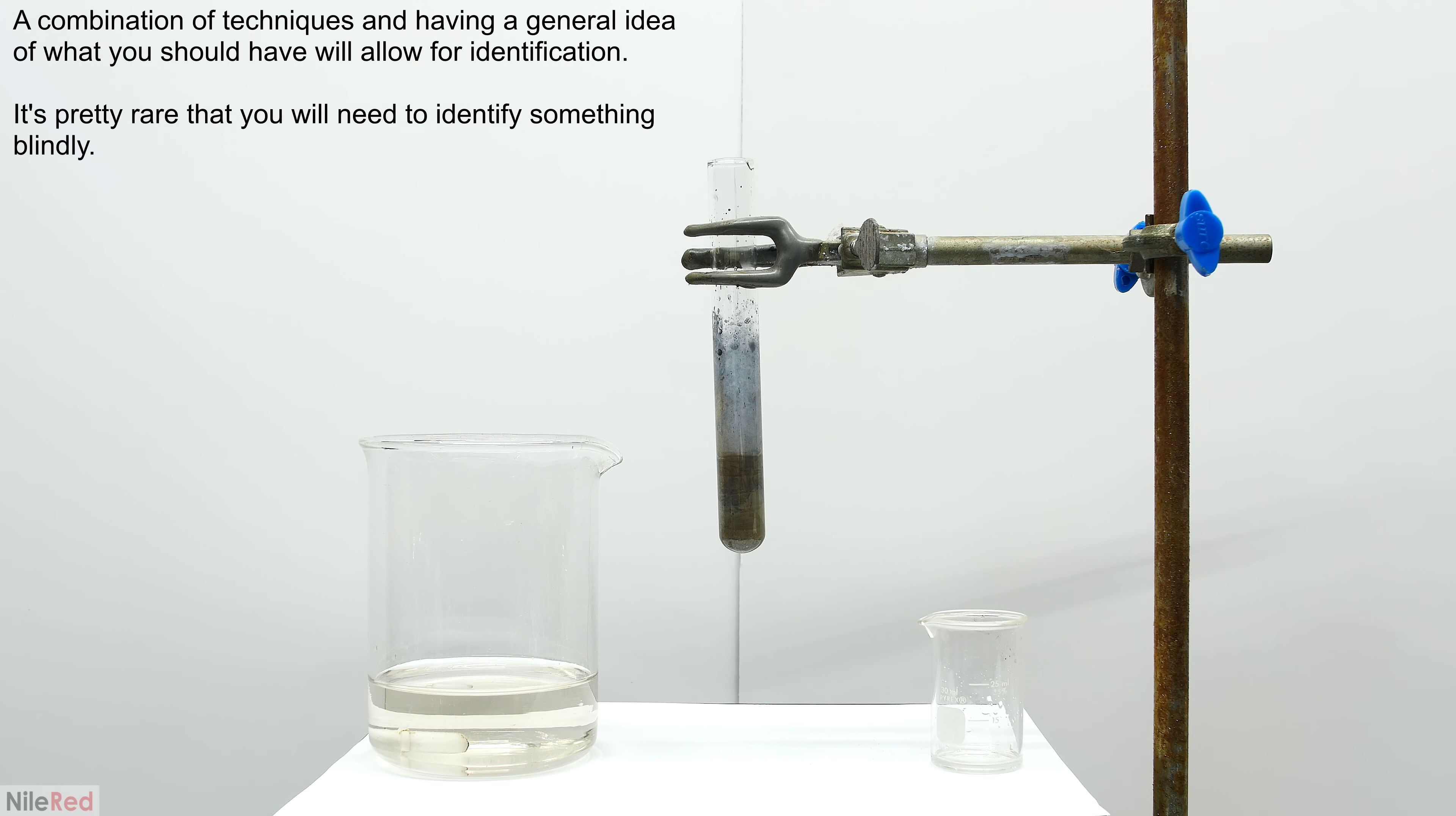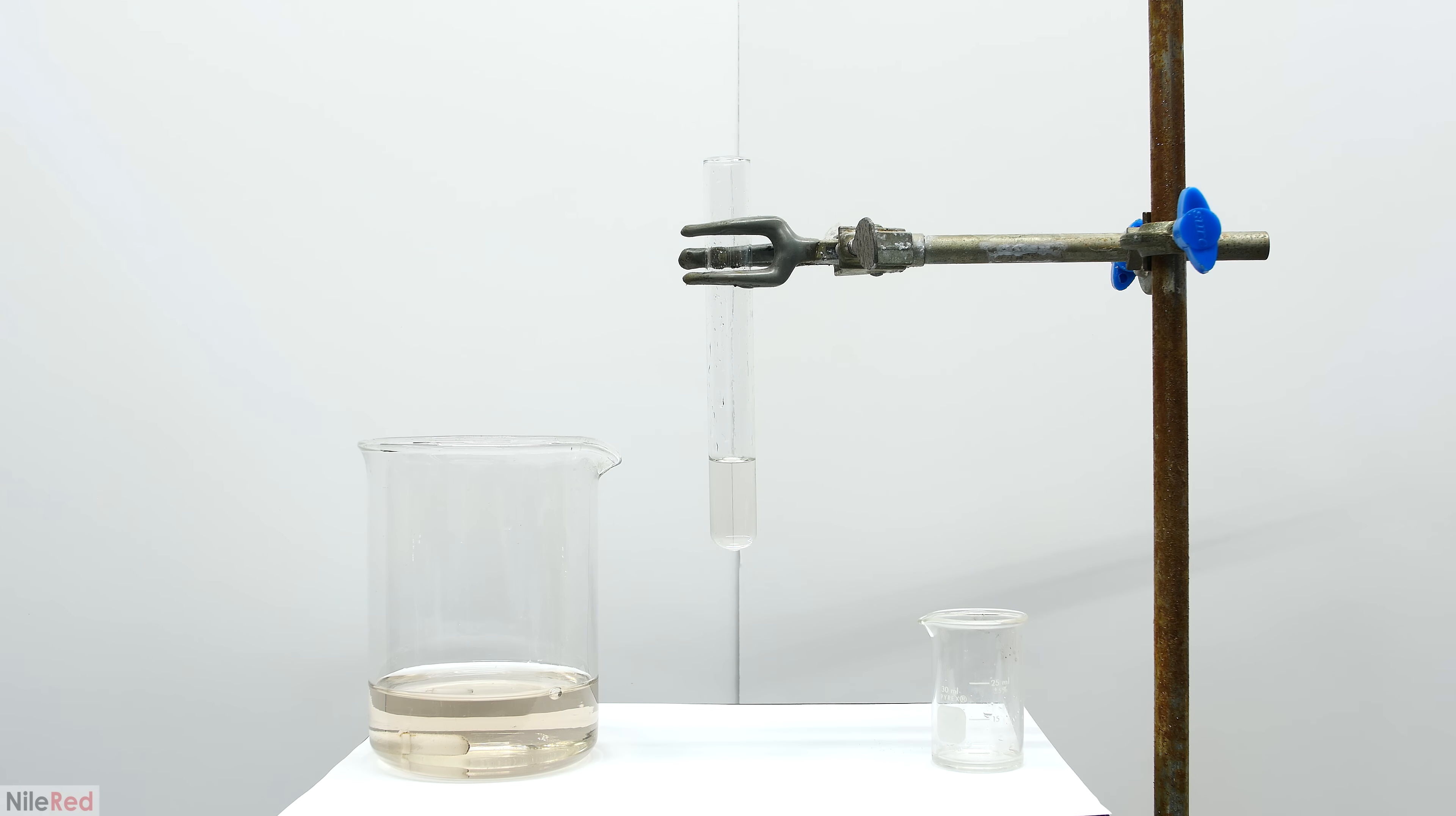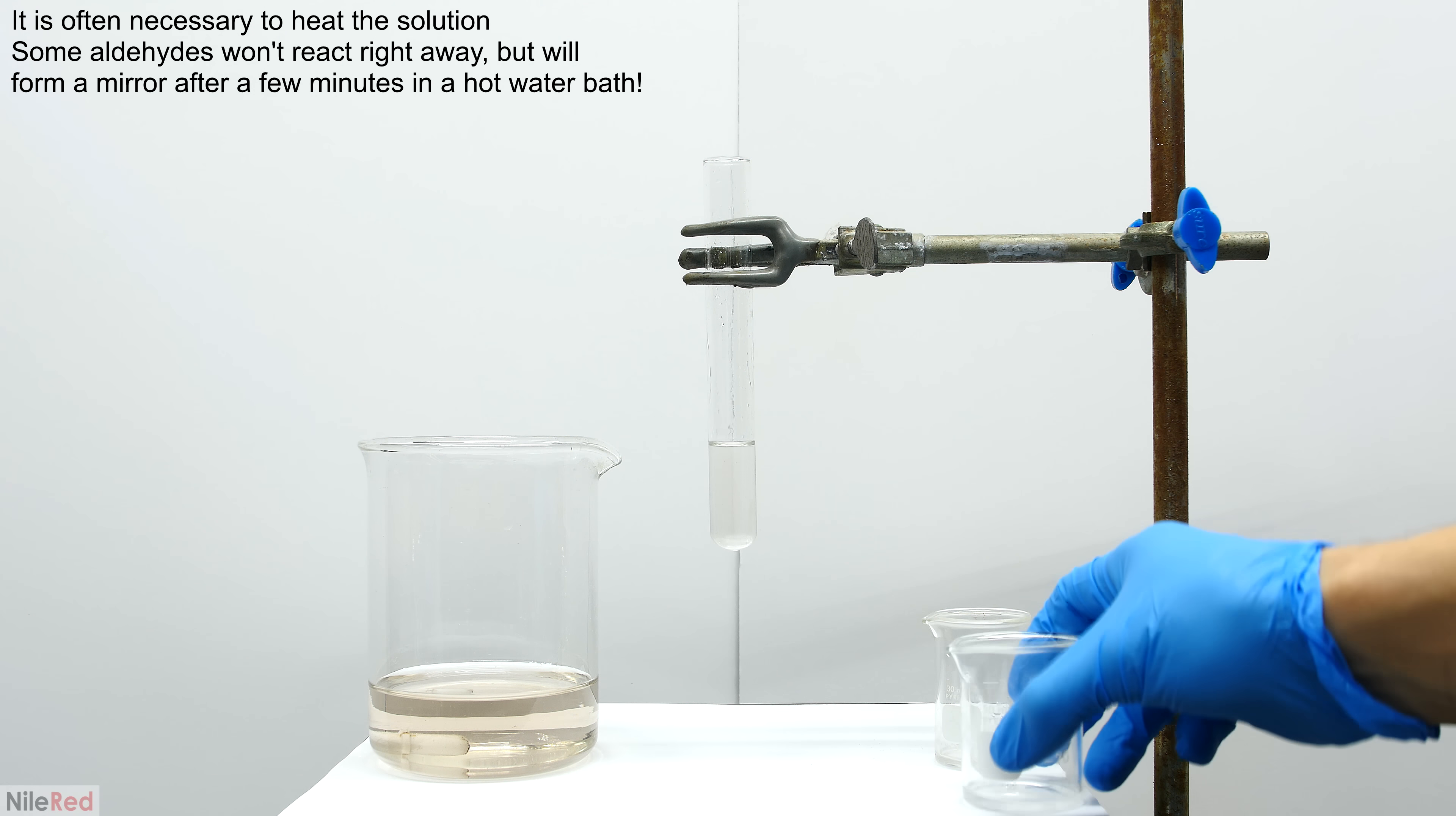A lot of these old-school methods used to identify functional groups need to be paired with other techniques. Now we can move on to the second unknown. It took me a few minutes between the tests, and you can see the Tollens reagent got even a little darker. Just like before, I poured in a bunch of the unknown, and I swirled around the test tube. This time, however, we don't form any colloidal silver.